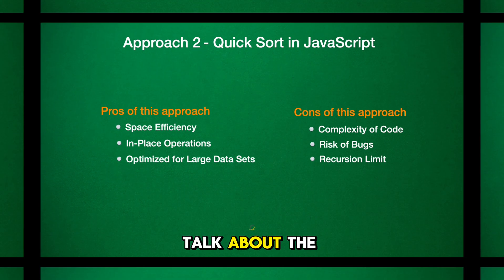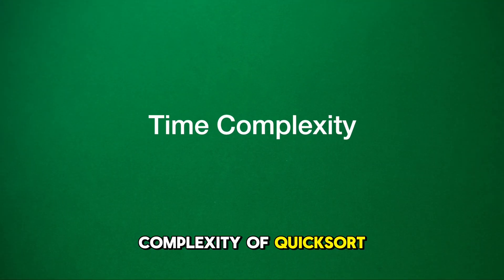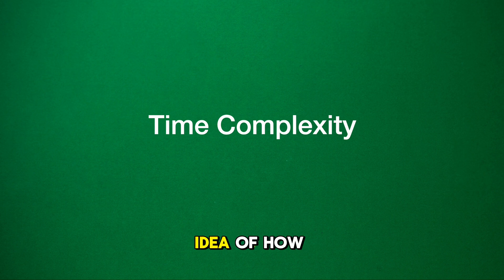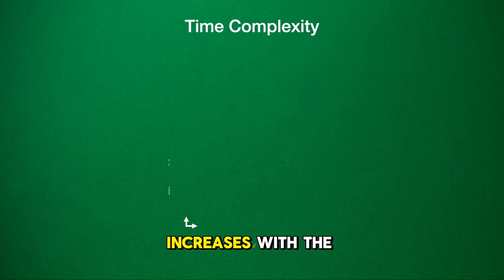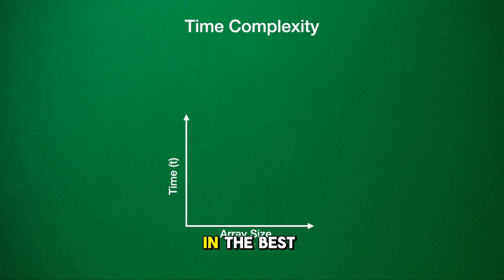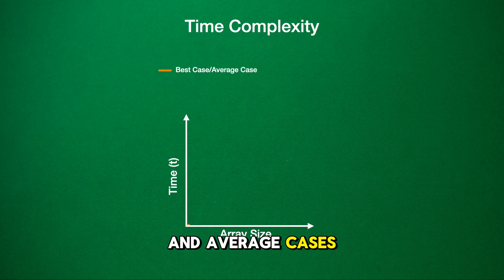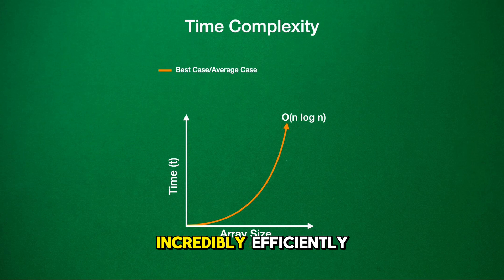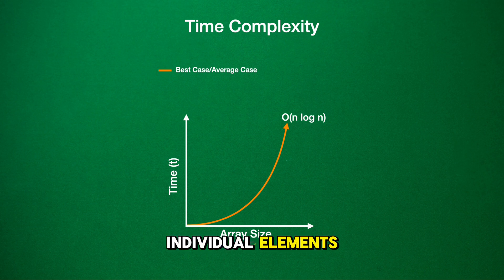Moving on, let's talk about the time complexity of quick sort. Time complexity gives us an idea of how the sorting time increases with the size of the input. In the best and average cases, where the pivot divides the array into relatively equal parts, the quick sort algorithm works incredibly efficiently. Each partitioning involves looking at each element, which gives us the n part of the complexity. And the log n part comes from the number of times we need to split the array to get down to individual elements.